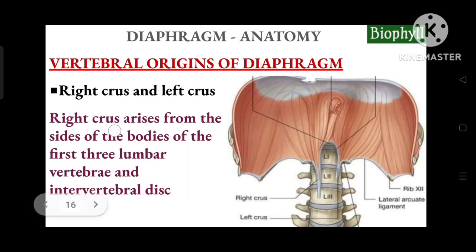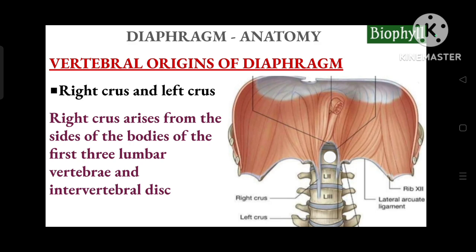The right crus arises from the sides of the bodies of the first three lumbar vertebrae — L1, L2, and L3 — and the intervertebral discs between them.